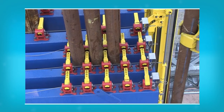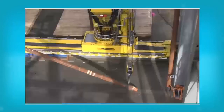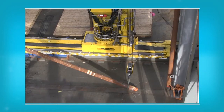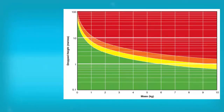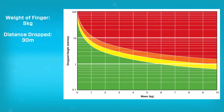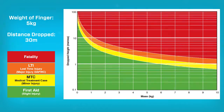Here we see a drill pipe racking finger falling from the finger board to the drill floor below. The finger is five kilograms and fell a total distance of 30 meters. Using a dropped objects calculator we can see that this could easily result in a fatality if it struck someone on the drill floor.